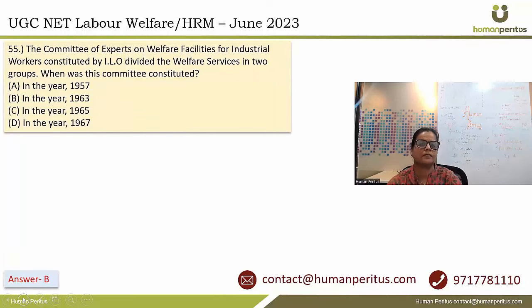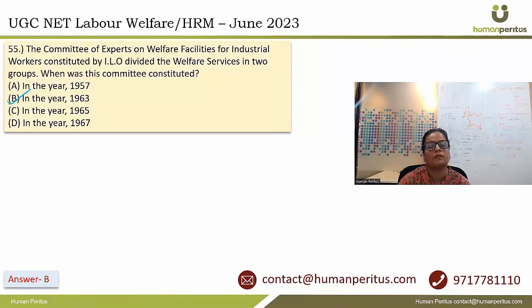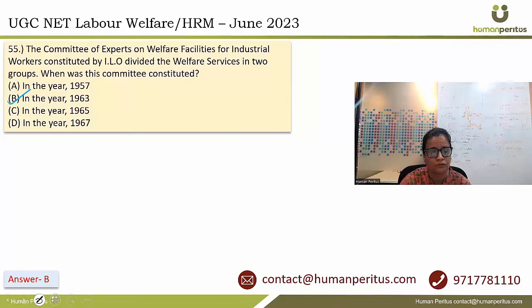The Committee of Experts on Welfare Facilities for Industrial Workers constituted by the ILO divided welfare services into two groups. This committee was constituted in the year 1963, and it divided welfare facilities into intramural and extramural facilities. Answer is option B.